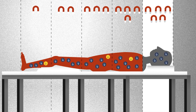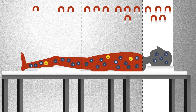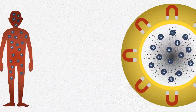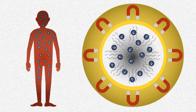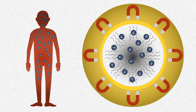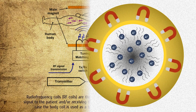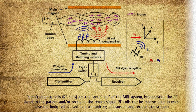The coil is usually built into the body of the scanner. The power of the transmitter is variable, but high-end whole body scanners may have a peak output power of up to 35 kilowatts and be capable of sustaining average power of 1 kilowatt.